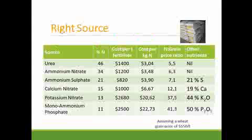Looking at the source of nitrogen, we are most familiar with urea and ammonium nitrate. Urea has 46 percent nitrogen; ammonium nitrate has about 34 percent nitrogen. Ammonium sulfate is another option with 21 percent nitrogen. The cost of these fertilizers has increased significantly — the cost of a kilogram of nitrogen in urea is about $3 something, ammonium nitrate about $3.50, and ammonium sulfate about $3.90. Other sources of nitrogen are just too expensive to consider applying to wheat.